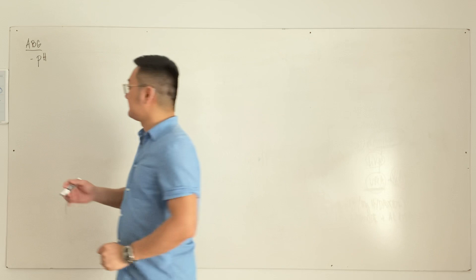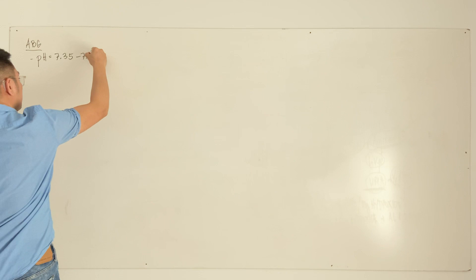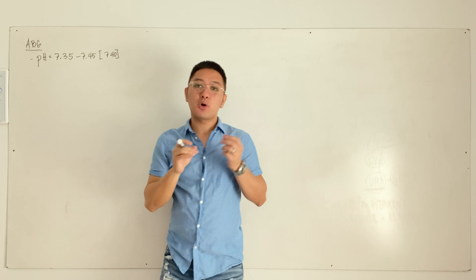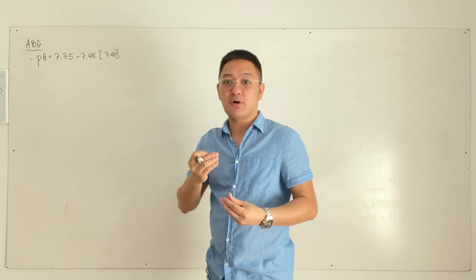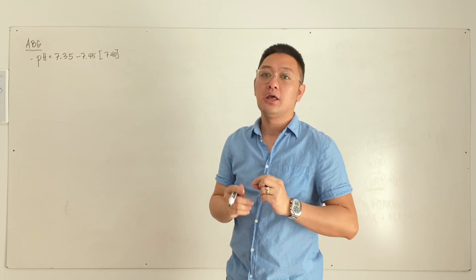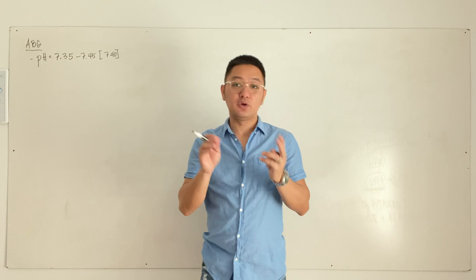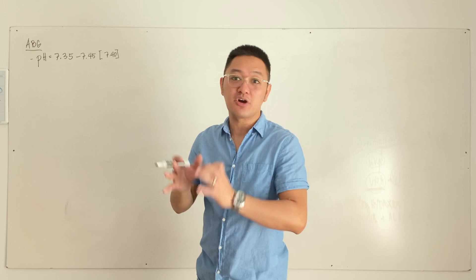The normal blood pH ranges from 7.35 to 7.45, with a mean of 7.40. Remember this mean of 7.40 — it is very helpful later when identifying the type of full compensation. When you encounter fully compensated respiratory or metabolic conditions in your exam, this mean will tell you whether the full compensation is respiratory or metabolic in nature.